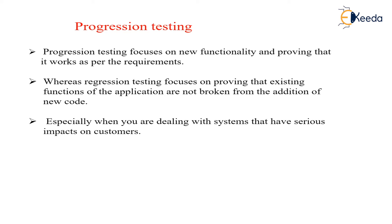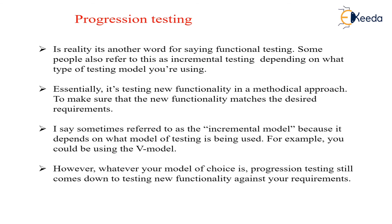Especially when you're dealing with a company that has serious influence on your customers, you need to think about the impact. A certain piece of code will change the behavior of the code and will change the existing output which is required for a customer. That is regression. And progression is when you are adding new functionality that works as per the requirements.